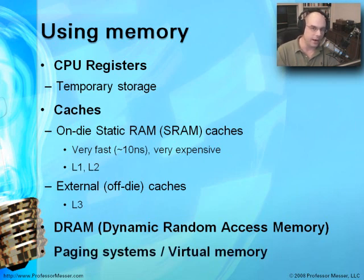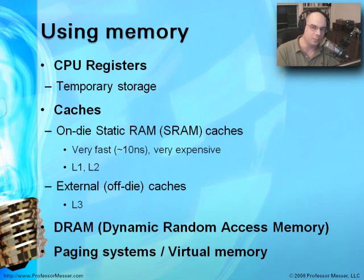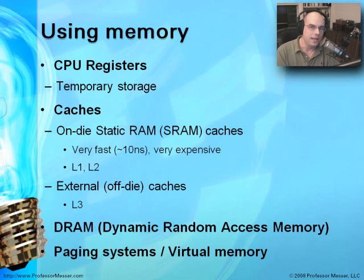When your system is using programs, you may run out of memory, and the OS will save information you aren't using to the hard drive. You may see your hard drive flashing even when you're not doing anything active — that's it saving or retrieving information. This is called virtual memory. It's not real memory chips; we're using a portion of the hard drive as memory, extending the capabilities of your system. The mechanism for moving data in and out is called a paging system.